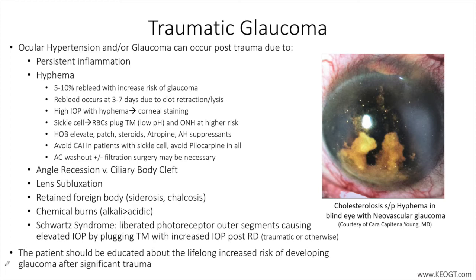In the case of hyphema with sickle cell disease or sickle cell trait, RBCs may plug the trabecular meshwork especially in the presence of a low pH environment, and the optic nerve head is at higher risk in these patients. Head of bed elevation, use of patching, steroids, atropine, and aqueous humor suppressants can all be utilized.